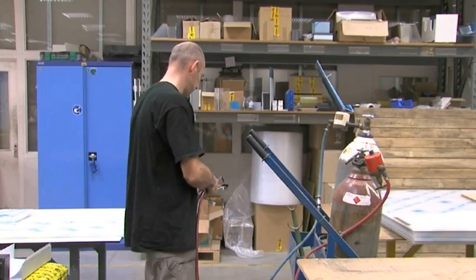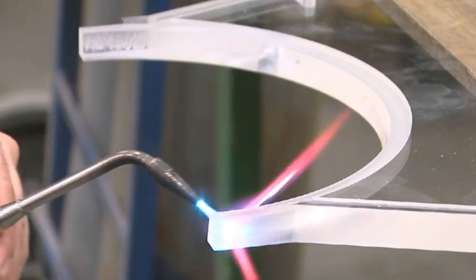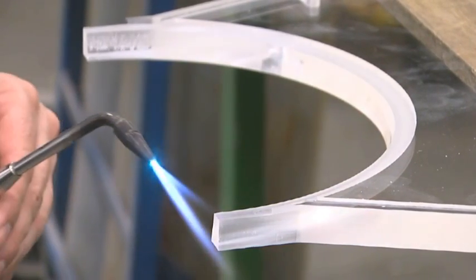The most commonly used method is flame polishing, using a blow torch to carefully heat up the cut edges to the point where they start to melt.